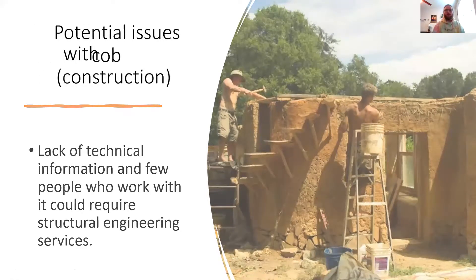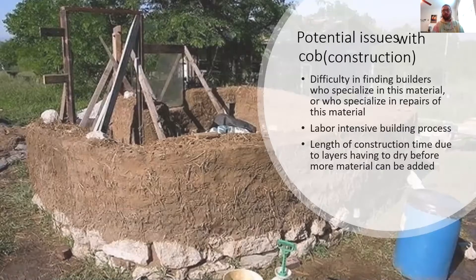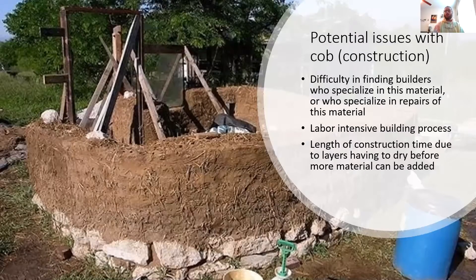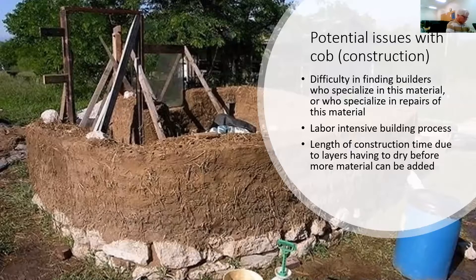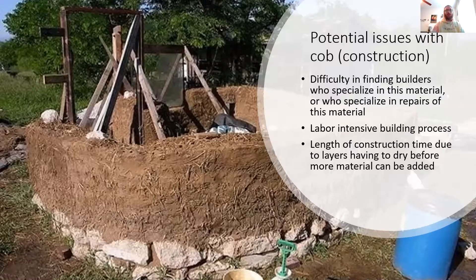Another issue is difficulty finding builders who specialize in the material and in its repair. But you may catch a break working in this region — there's Earth Haven Eco Village out in Black Mountain, which is a good networking opportunity for natural builders. Also, cob is very labor intensive to mix, which can be a setback, as well as the length of construction, because each layer that you put up has to dry before you can add the next consecutive layer.